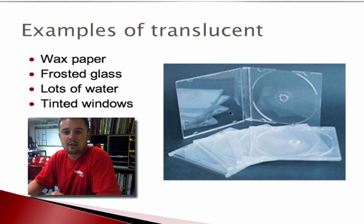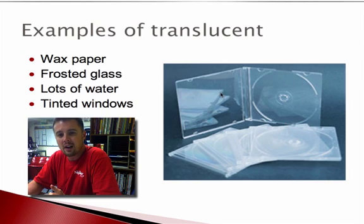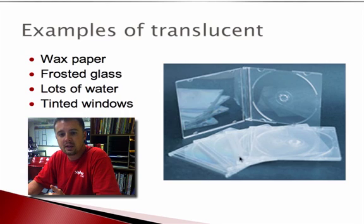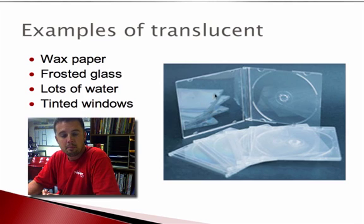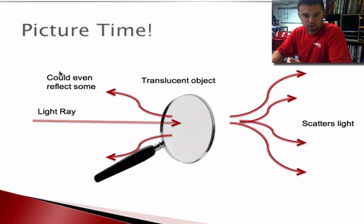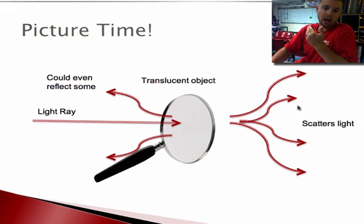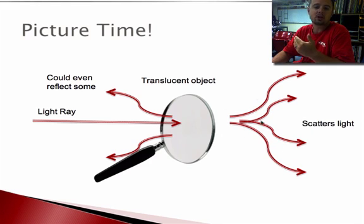These CD cases are great examples of translucent objects. You can see the reflection of the CD cases on the table clearly, yet you can also see through the case. When drawing a light ray diagram, light hitting a translucent object is let through but changes direction slightly — it scatters — and some of that light could also be reflected.